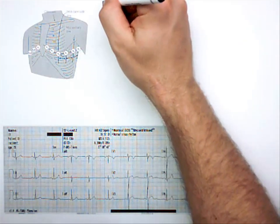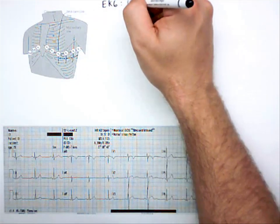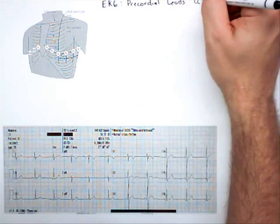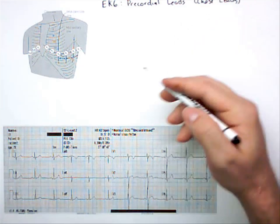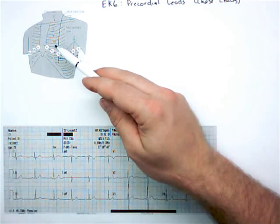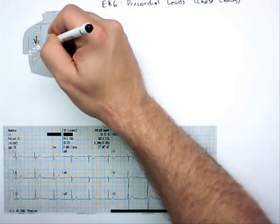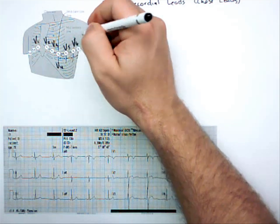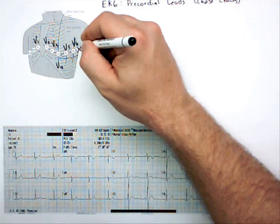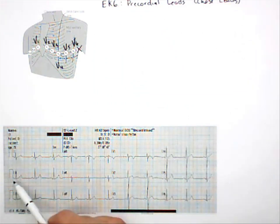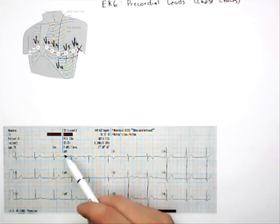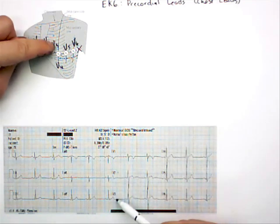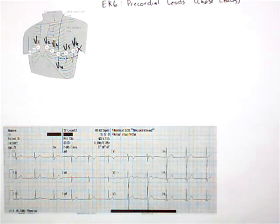This is the next video in EKG — we're going to talk about precordial leads, also called chest leads. I got this picture from Wikipedia, Creative Commons, and it shows you where those leads are. This is V1, V2, V3, V4, V5, and usually just V6 — this figure has a V7, but there's usually just V6. That's how we get to 12 leads: lead 1, lead 2, lead 3, augmented leads AVR, AVL, and AVF, and then our 6 precordial leads V1 through V6.